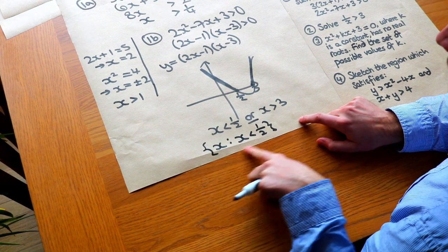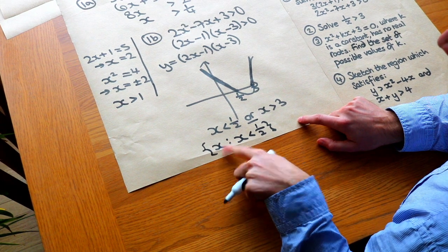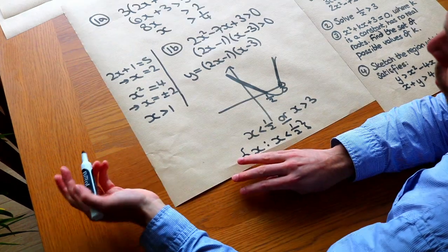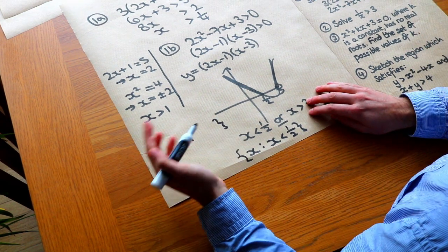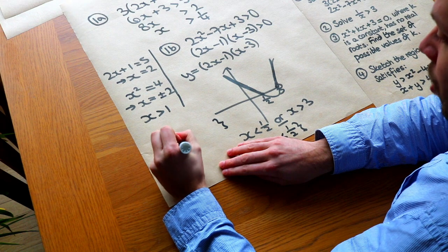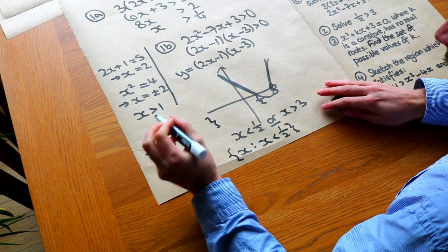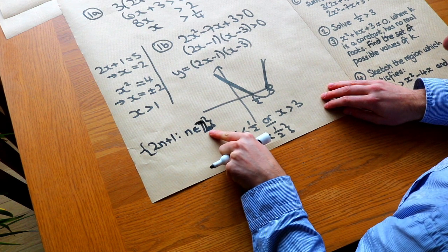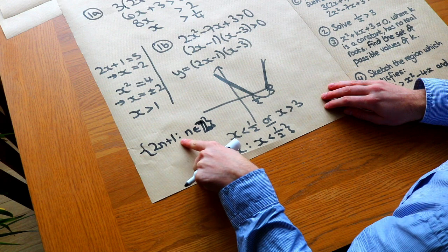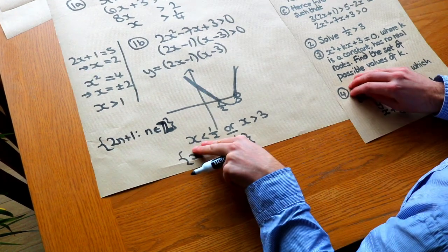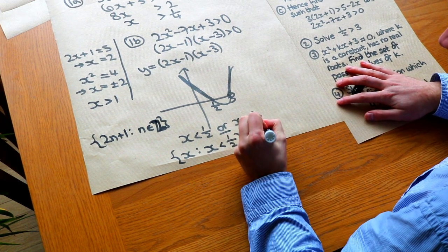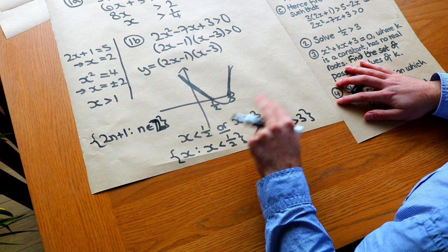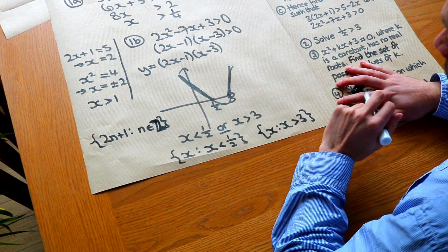In set notation, we write {x : x < 1/2}. The left side is the expression we want, and the right of the colon states the conditions. For example, all odd integers can be written as {2n + 1 : n ∈ ℤ}, where ℤ denotes the set of all integers. We also want the set {x : x > 3}, and since we want either set, we take the union of the two sets.